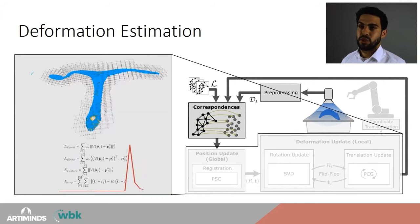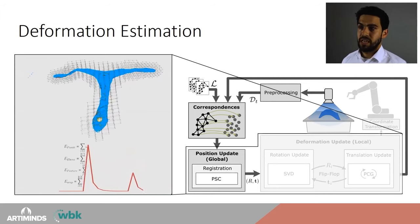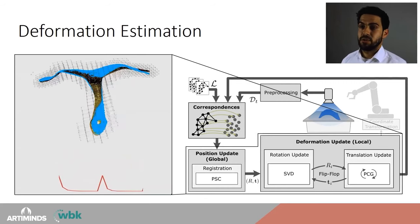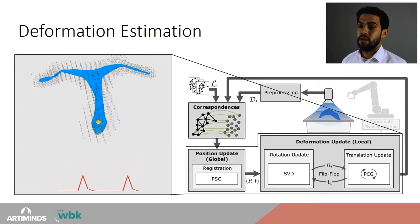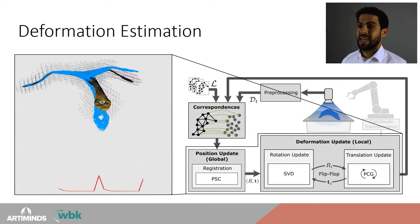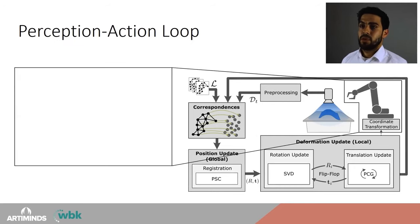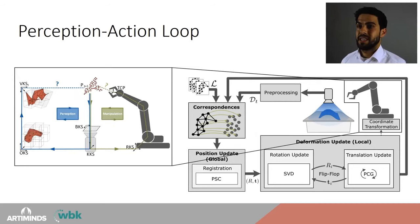Additionally, we use a regularization term for occluded areas of the object for which we can't find correspondences. The regularization term is an as-rigid-as-possible approach. The first step of our solver does a position update — classic rigid registration — then we leverage a flip-flop solver structure to minimize the error terms iteratively. Once the solver converges, the next depth image from the camera is processed. To close the perception-action loop, we integrate an interface through which a robot can request the pose of a certain point at any time.